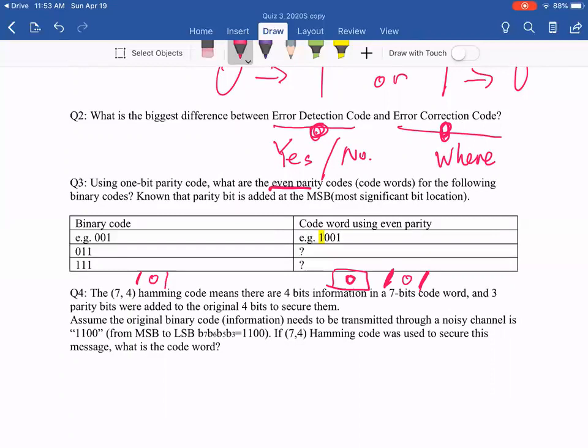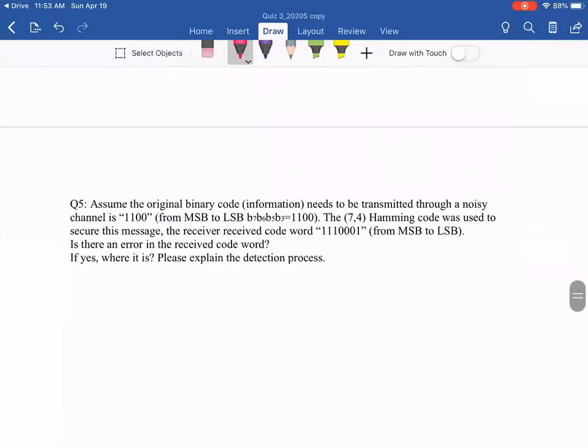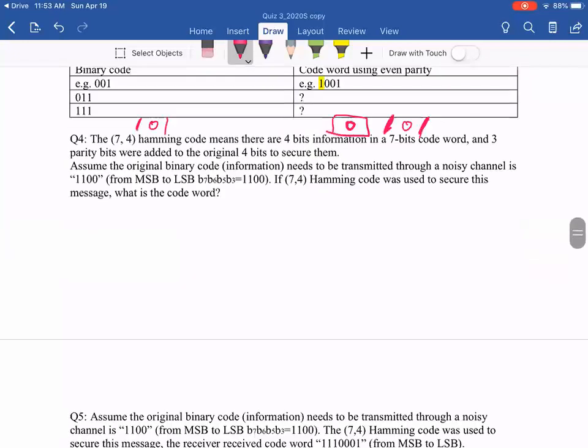So the last question here. Q4 and Q5 are actually using the 7-4 hamming code. First of all, if you would like to generate the 7-4 hamming code. And given the original message is 1, 1, 0, 0, 1, 1, 0, 0.